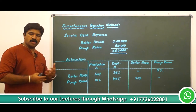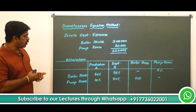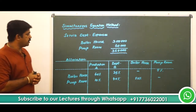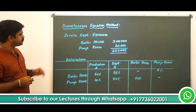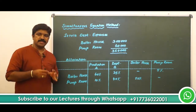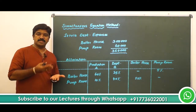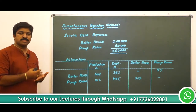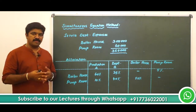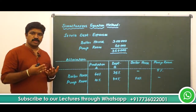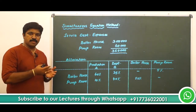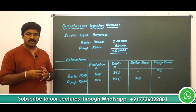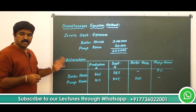Both service departments are availing each other's services — boiler house is rendering service to pump room, and pump room is also rendering service to boiler house. We approach this using the simultaneous equation method because this is not a non-reciprocal case. Since both service departments are availing services, the total cost of each service department will contain an element of the other's cost.